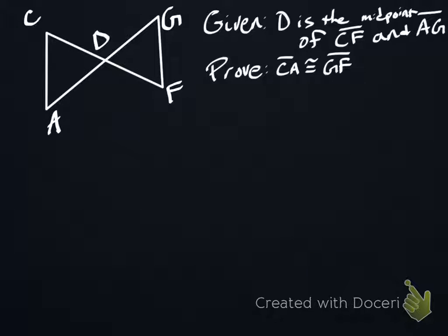So we're going to end up showing that the triangles are equal or congruent, and that implies, therefore, that the parts are congruent. So let's dive in.